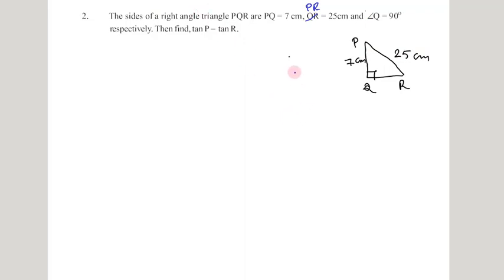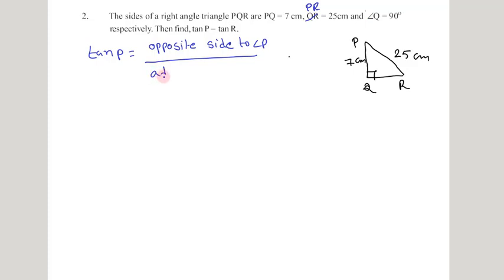They are asking us to find out the value of tan P minus tan R. To find tan P, what is the definition of tan P? Tan P is defined as the opposite side to angle P divided by the adjacent side to angle P. Now in triangle PQR, what is the side opposite to angle P? That is QR. Do we know the measurement of QR? No, we don't know the measurement of QR, so firstly we need to find it.